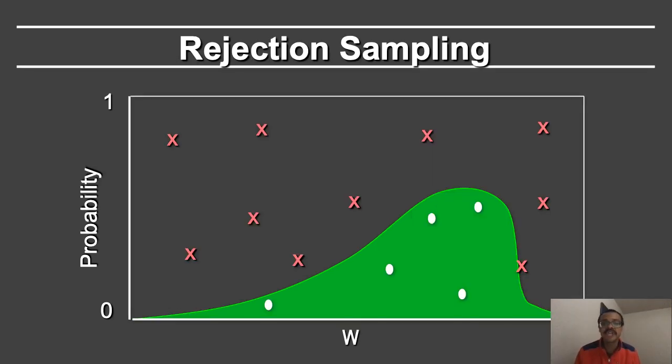Still another approach is rejection sampling. In this case, you take your probability distribution function. You consider the maximum value, and so the value here has to be greater than the maximum of the PDF. In this case, we've re-normalized it so this maximum value is 1, which is greater than the maximum value here.